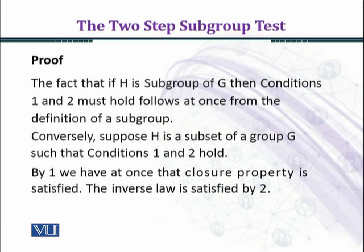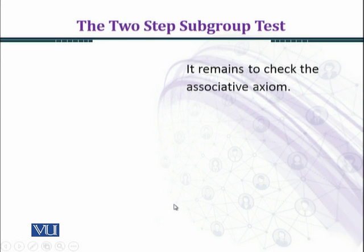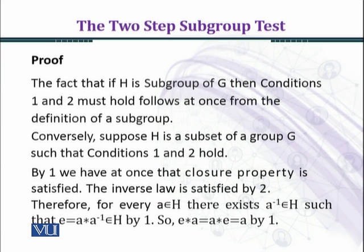By condition one, we have at once that the closure property is satisfied in H. The inverse law is satisfied by condition two. Therefore, for every a belonging to H, there exists a inverse belonging to H such that a star a inverse, which is the identity element E, belongs to H — by condition one, since closure holds.